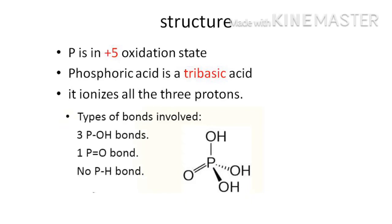In phosphoric acid, phosphorus is in the +5 oxidation state. It is a tribasic acid containing three P–OH bonds, and all three hydrogen atoms can be ionized. It also contains one P=O bond and no P–H bonds.